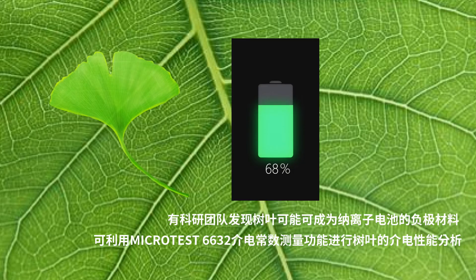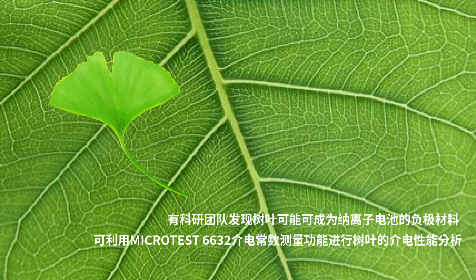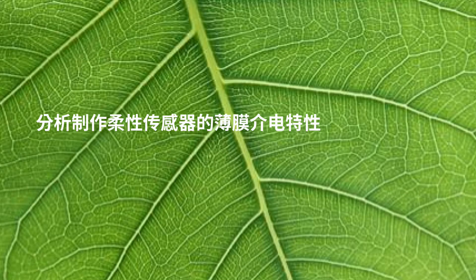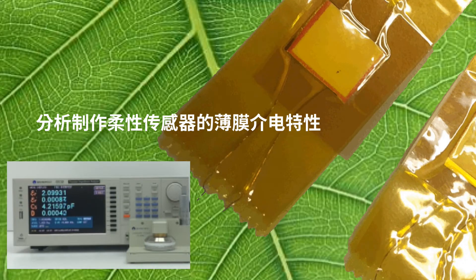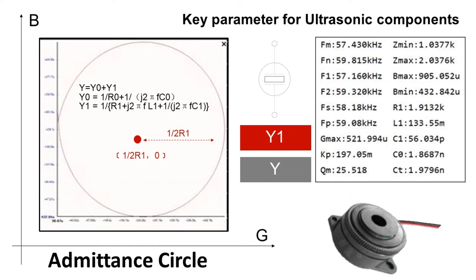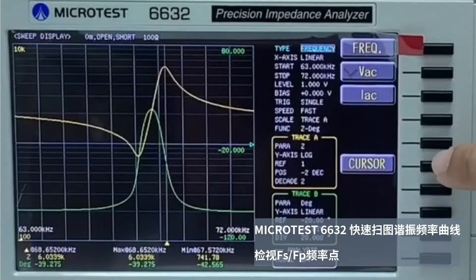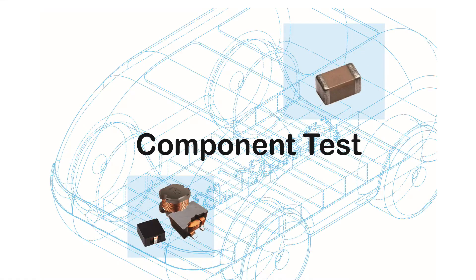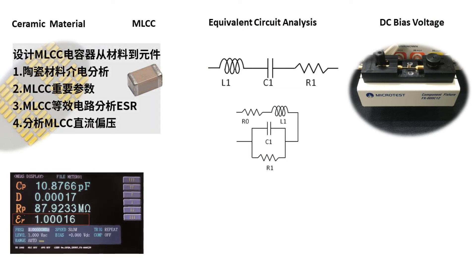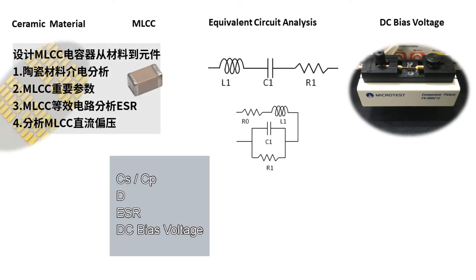Such applications include measuring the material of the negative electrode for sodium-ion batteries. The Microtest 6632 also supports evaluation of DC bias voltage characteristics with semiconductor-grade ceramic multi-layer capacitors.